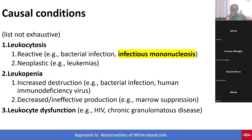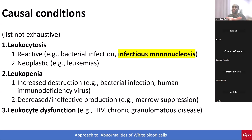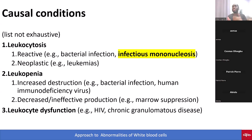Leukopenia is a decreased white cell count. It can be due to bacterial infection, or HIV — if you see HIV in study materials for this exam, it's not by chance; it's because it's specifically referenced in this objective. Leukopenia can also result from ineffective bone marrow production, such as in aplastic anemia, and from leukocyte dysfunction as seen in chronic granulomatous disease and HIV.